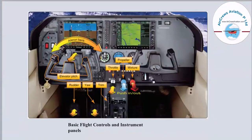This is a cockpit picture showing the different control panels. First we have the aileron, which allows the aircraft to bank left or right. Next we have the elevator pitch, used to pitch up or pitch down the aircraft. Below that we have the pedals — the rudder pedal and the yaw pedal — which are control surfaces of the aircraft. We also have a throttle to control the thrust, as well as propeller and mixture controls used in flight.